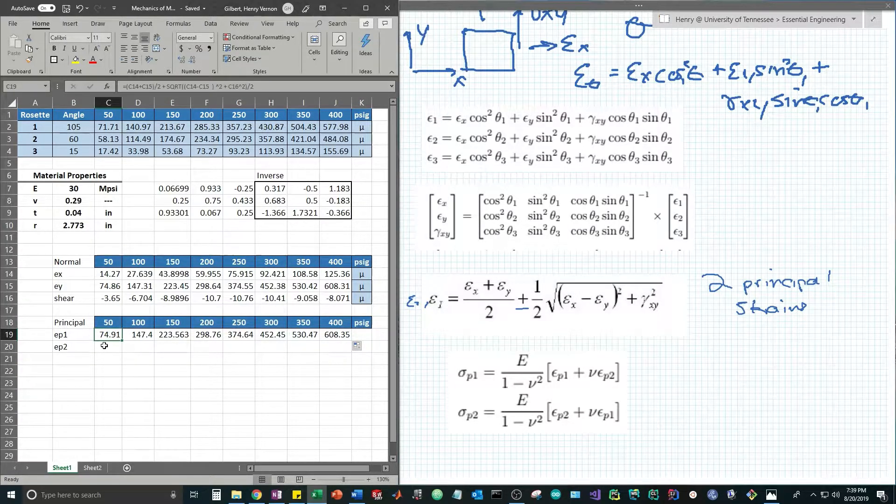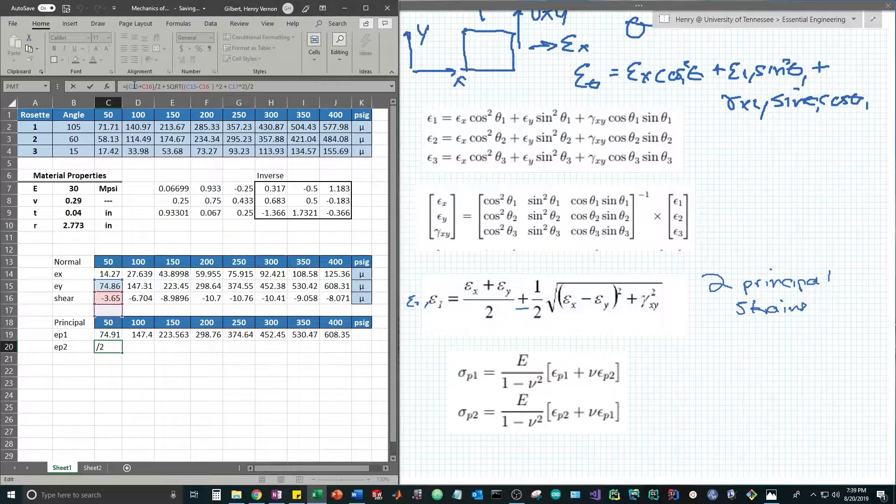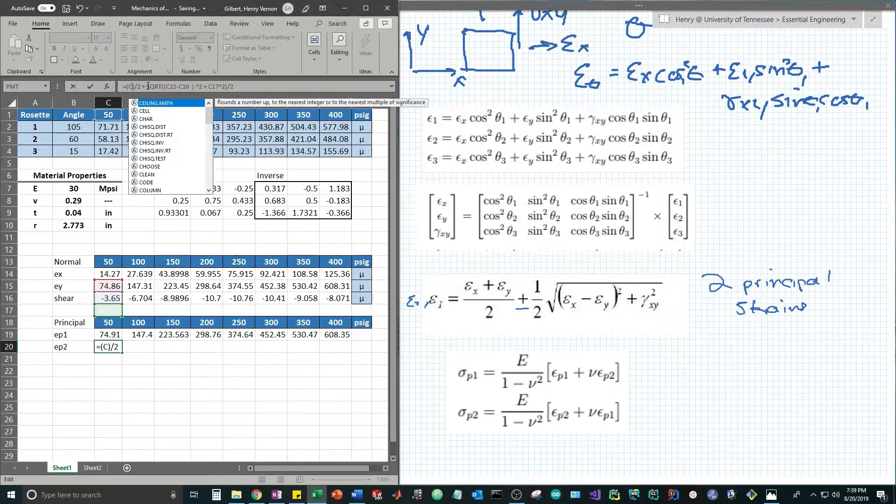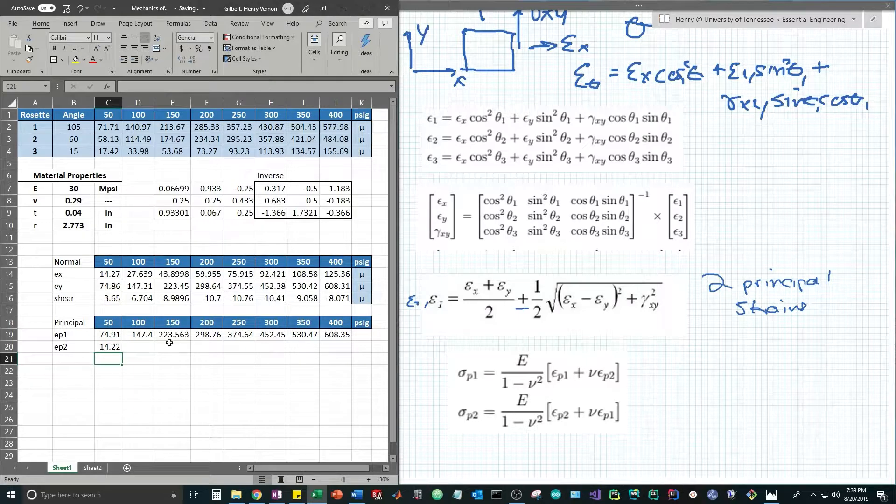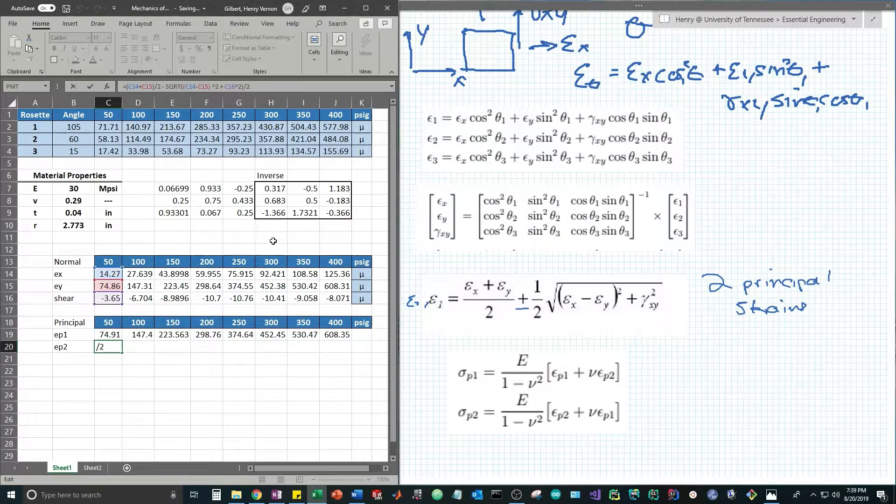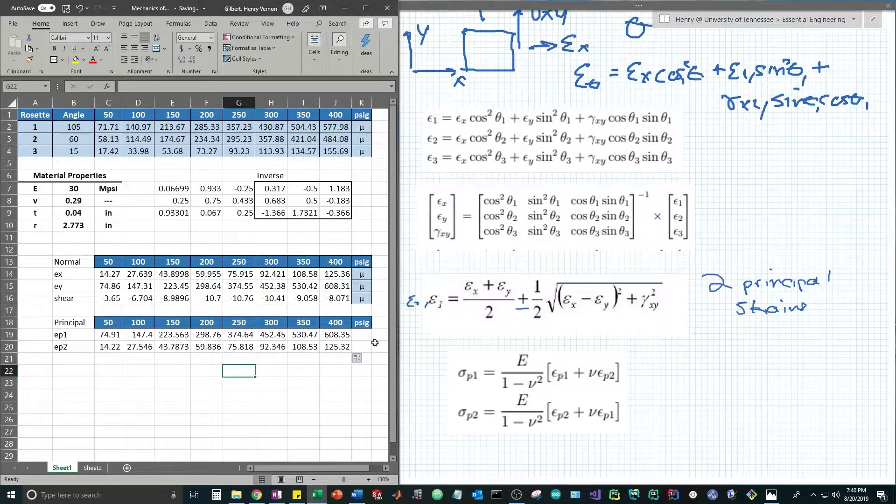The same idea goes for the second principal strain. The only difference is we're subtracting that square root. It's equal to epsilon x plus epsilon y divided by 2 minus square root of epsilon x minus epsilon y squared plus the shear strain squared. I would recommend typing this out fully if you're first doing this. Now that we have this calculated we drag it across to populate the second principal strain at every pressure value.